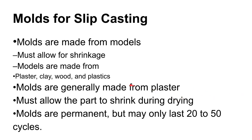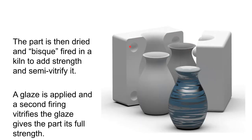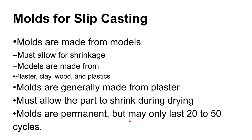Mold design for slip casting must accommodate part shrinkage during drying and require appropriate draft angles. Molds can be made in multiple segments to achieve undercuts and complex geometry. The plaster molds are considered semi-permanent — depending on the plaster compound, they may last only 20 to 50 cycles.